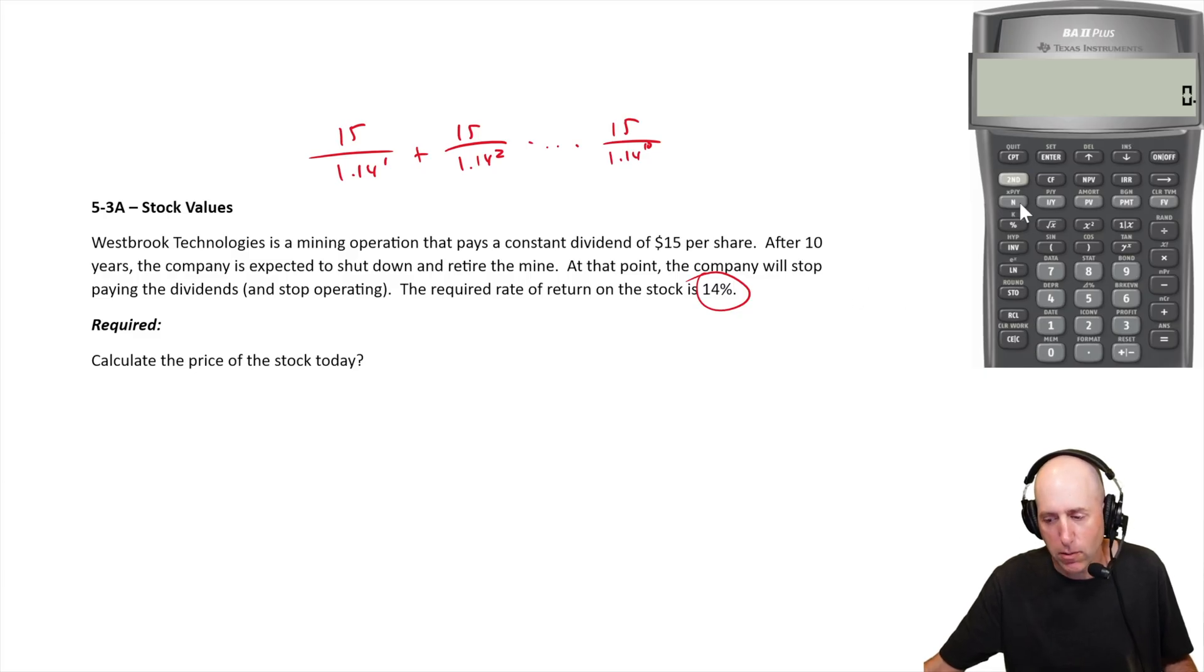I'm just clearing things out here. So let's start with my n. It's 10 years, so 10 goes in as my n. My i/y is the discount rate which is 14, so 14 goes in as my i/y. We don't know the PV.